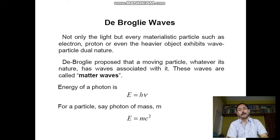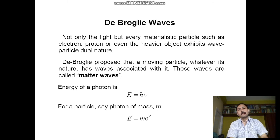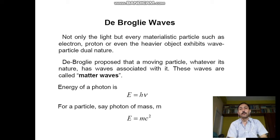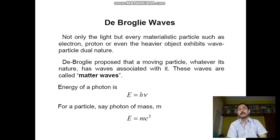De Broglie waves: not only light, but every materialistic particle — such as electron, proton, or even heavier objects — exhibits wave-like dual nature. De Broglie proposed that a moving particle, whatever its nature, has waves associated with it. These waves are called matter waves.